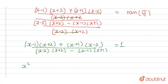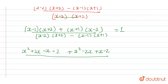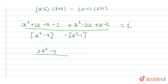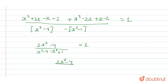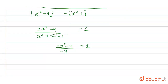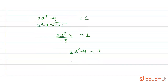Now we open the brackets. The numerator becomes x squared plus 2x minus x minus 2 plus x squared minus 2x plus x minus 2. The denominator simplifies using the difference of squares: (x squared minus 4) minus (x squared minus 1), giving 2x squared minus 4 on top and minus 3 on the bottom, equal to 1. Solving: 2x squared minus 4 equals minus 3, so 2x squared equals 1, and x equals 1 by root 2. So our final value of x is 1 by root 2.